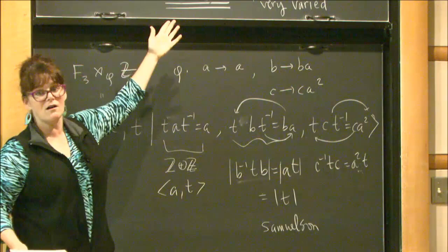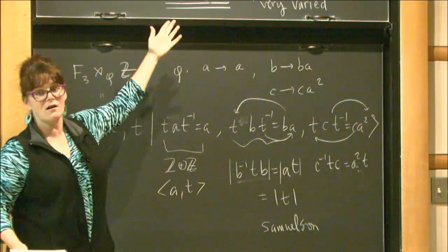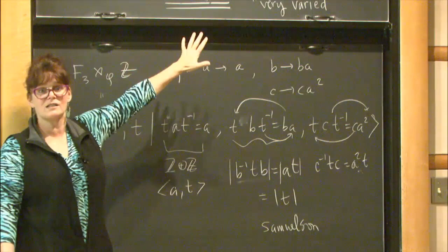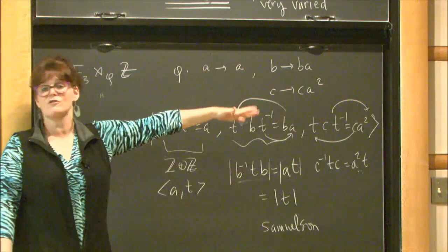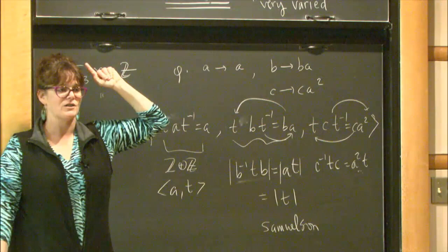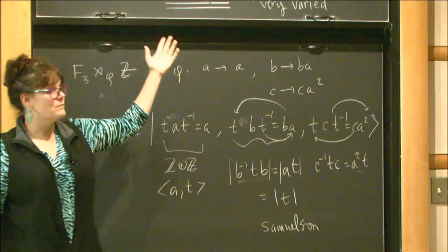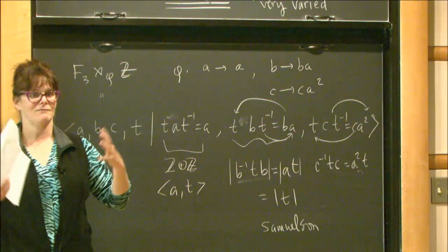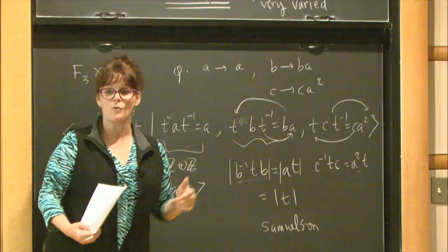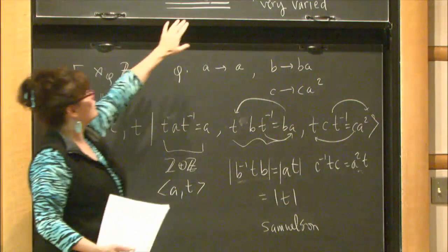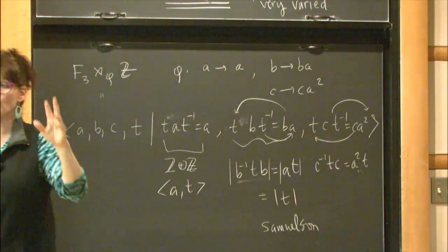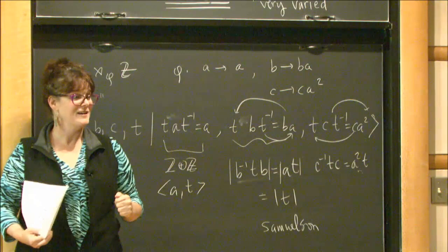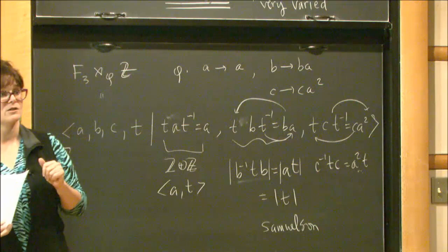The question of which Fₙ ⋊ Z are CAT(0), bi-automatic, or semi-hyperbolic is not answered. These are the test cases for any possible conjecture in geometric group theory — potential counterexamples for every single question. They are seemingly simple because all you need is an automorphism of a free group, but that leads to a surprisingly rich world. You can look and see: when do you get a hyperbolic group? When do you get a CAT(0) group? They're all non-positively curved in some sense because they all have quadratic isoperimetric inequality, which makes them so delicate.